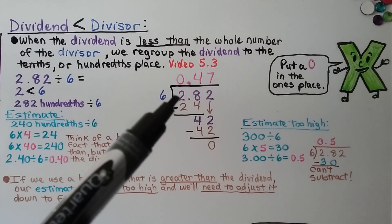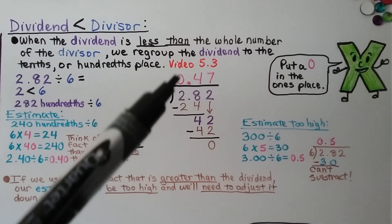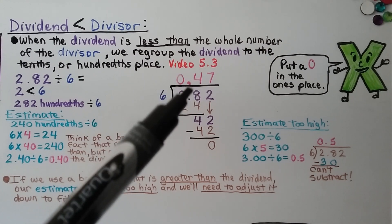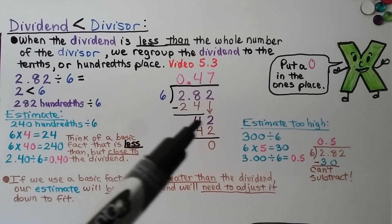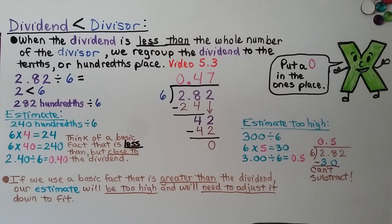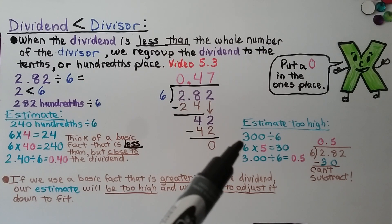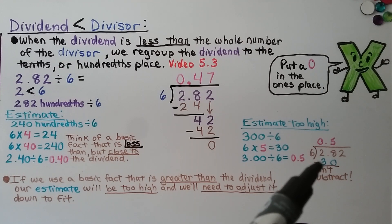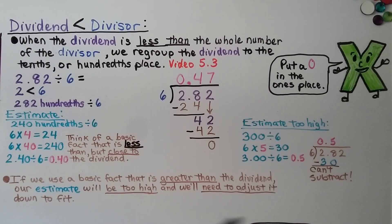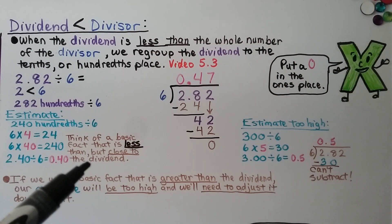6 can't fit into the 2, so we have a 0 above the 2 in the ones place. 6 can fit into 28 four times; 6 times 4 is 24. We subtract and get 4, then bring down the 2. 6 fits into 42 seven times because 6 times 7 is 42; we get a remainder of 0. We have 47 hundredths. Note: if we had estimated 282 as 300, 300 hundredths divided by 6 would give a 5 in our quotient, but 6 times 5 is 30, which we can't subtract from 28. So it's better to think of a basic fact that is less than but close to the dividend.